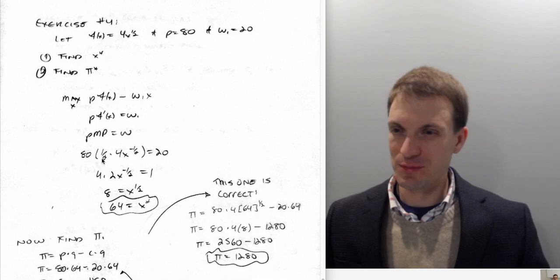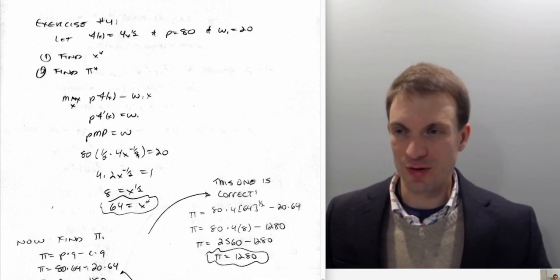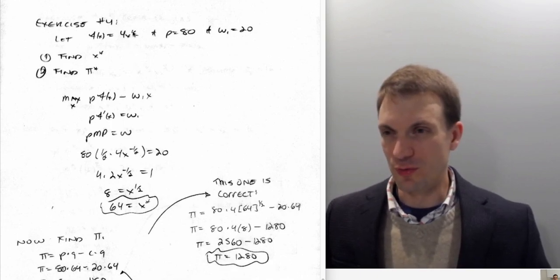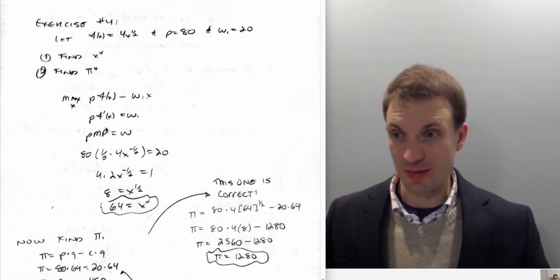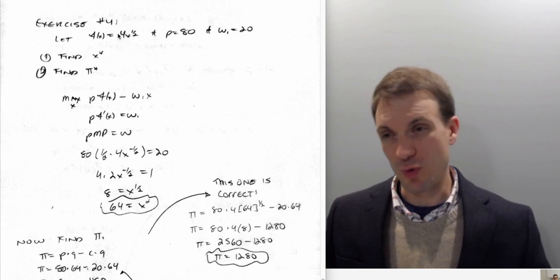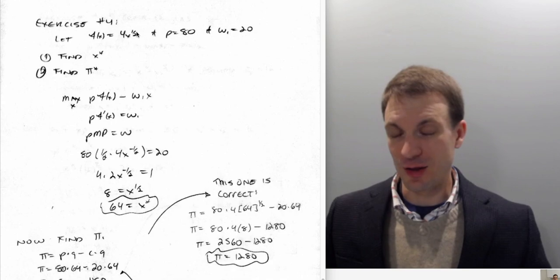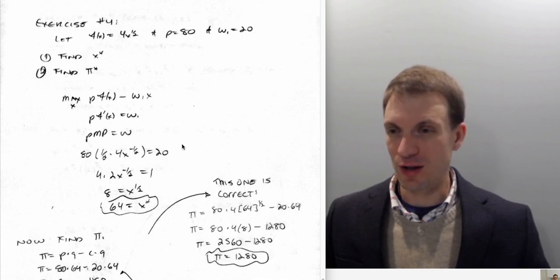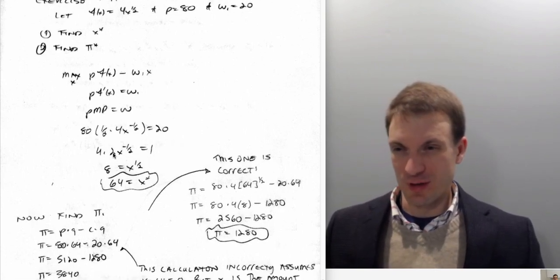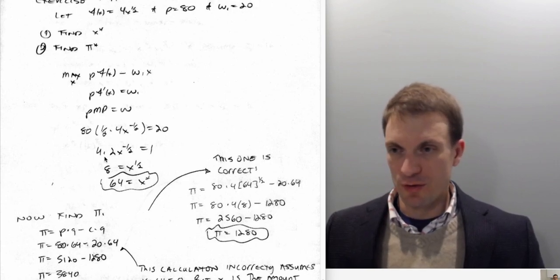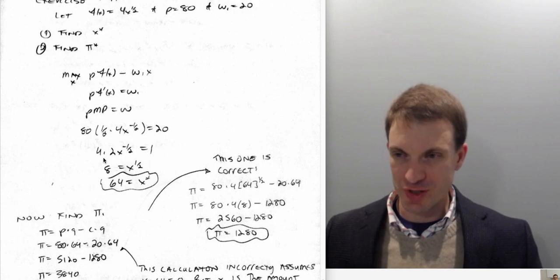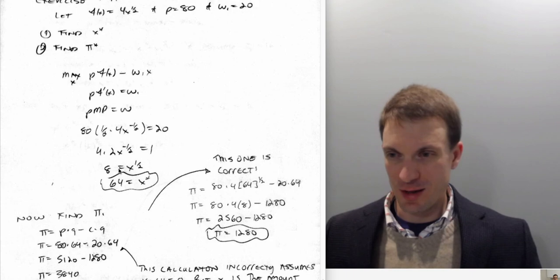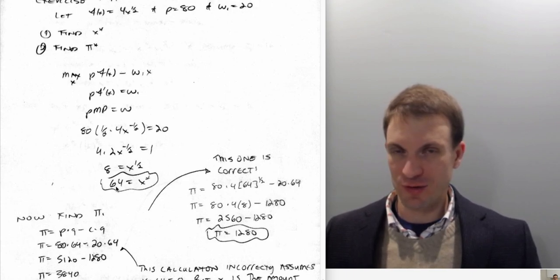The first-order condition is P times f-prime of x equals omega 1. The price is 80. The marginal product is one-half times 4, which is 2, times x to the minus one-half. So we have 80 times 2 times x to the minus one-half equals 20. Dividing through by 20 gives 8 times x to the minus one-half equals 1. This cleans up: dividing through by 4 gives 2 equals x to the one-half. Solving gives x equals 64.